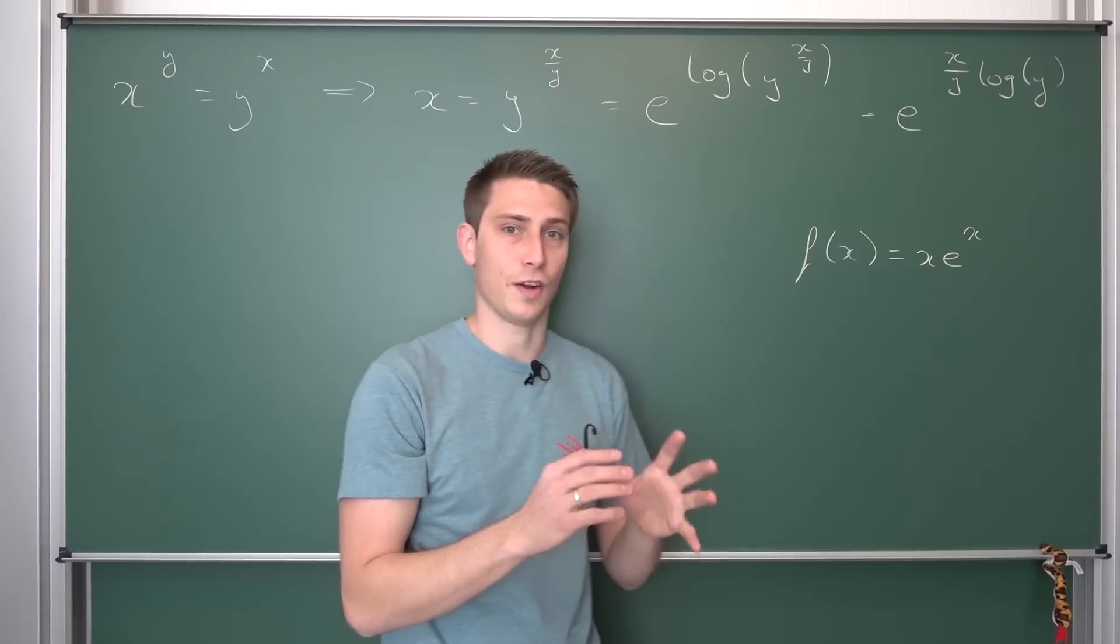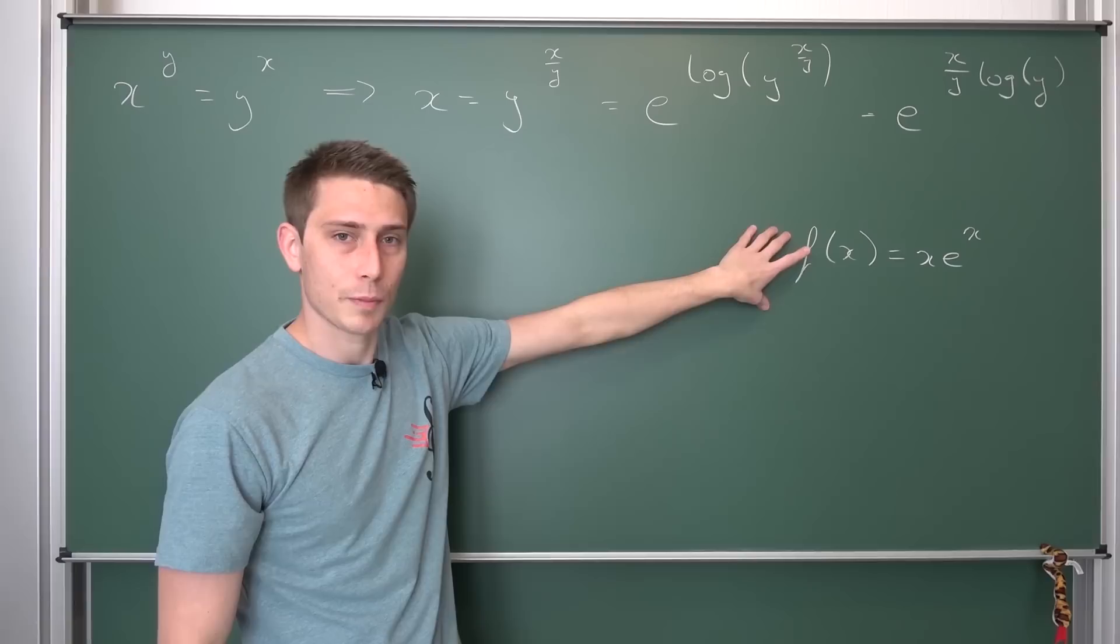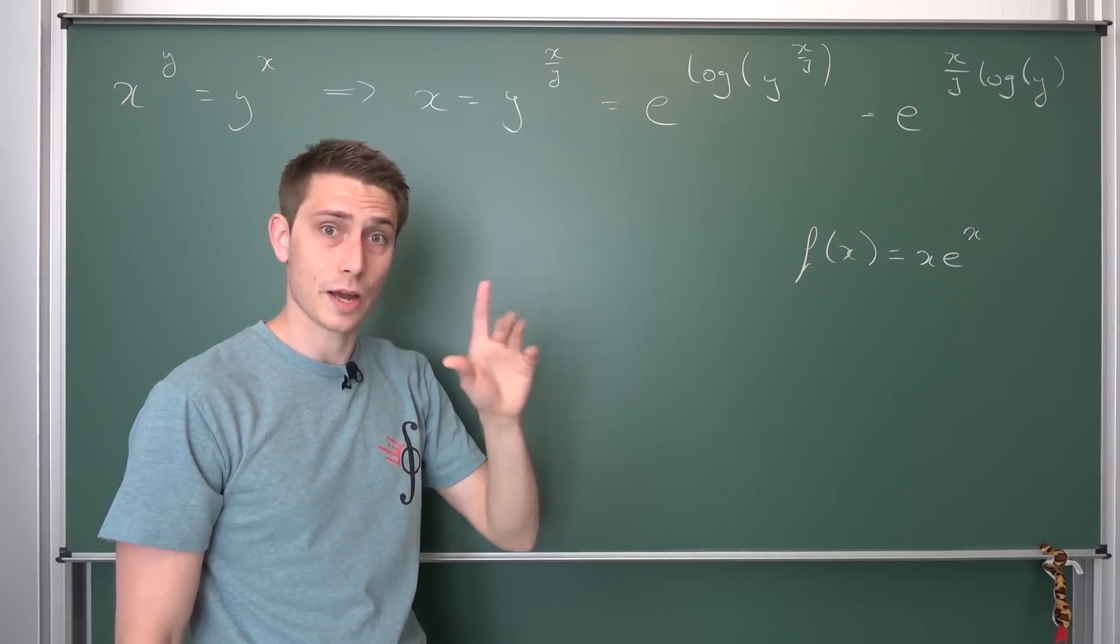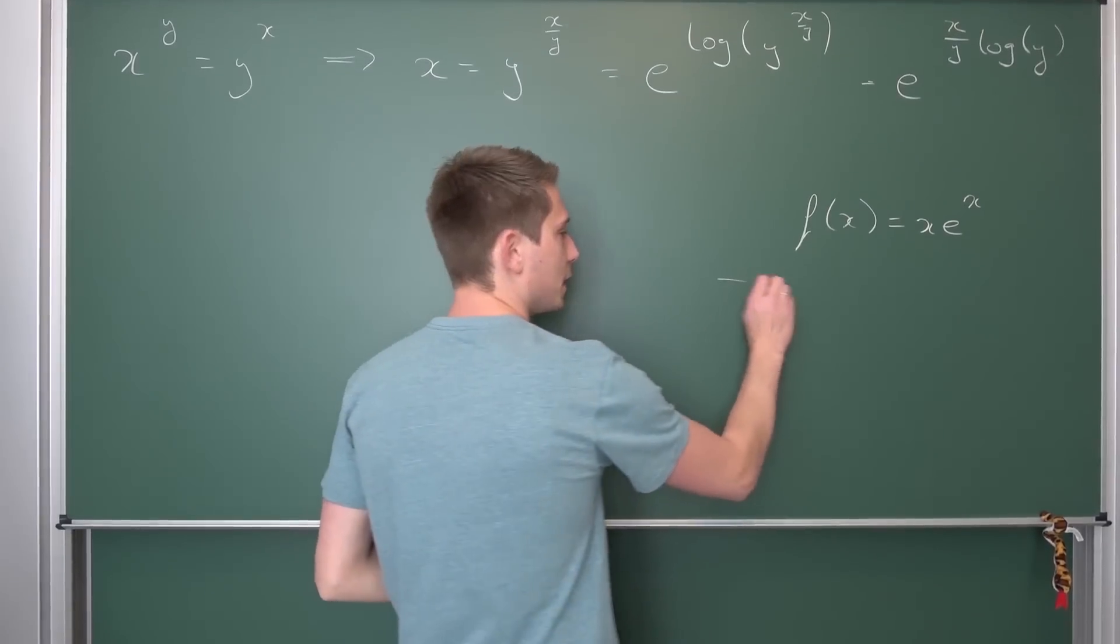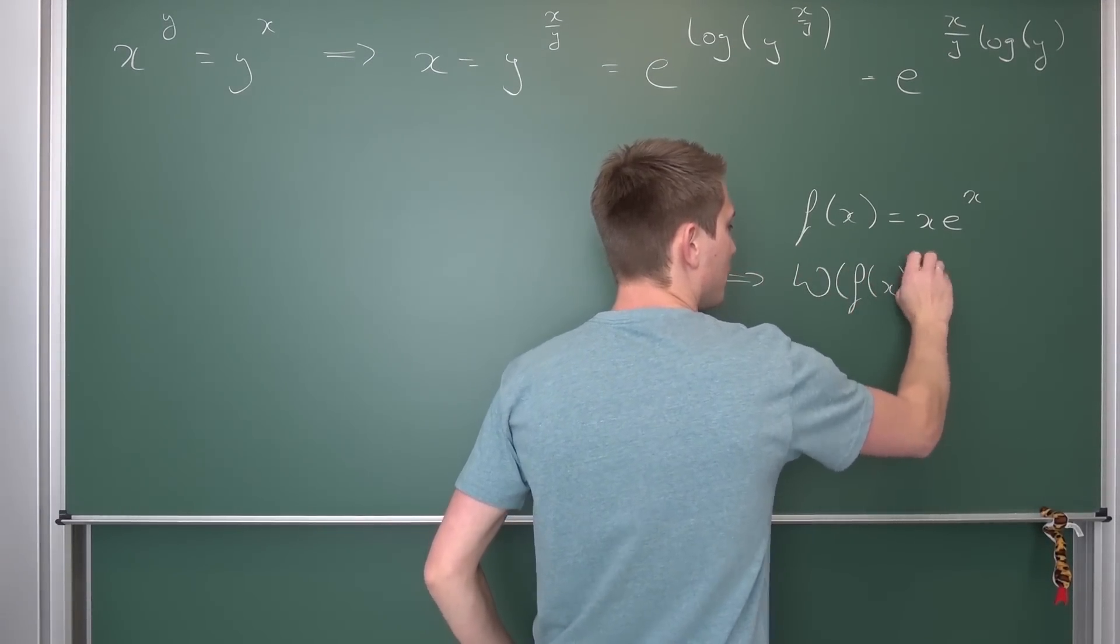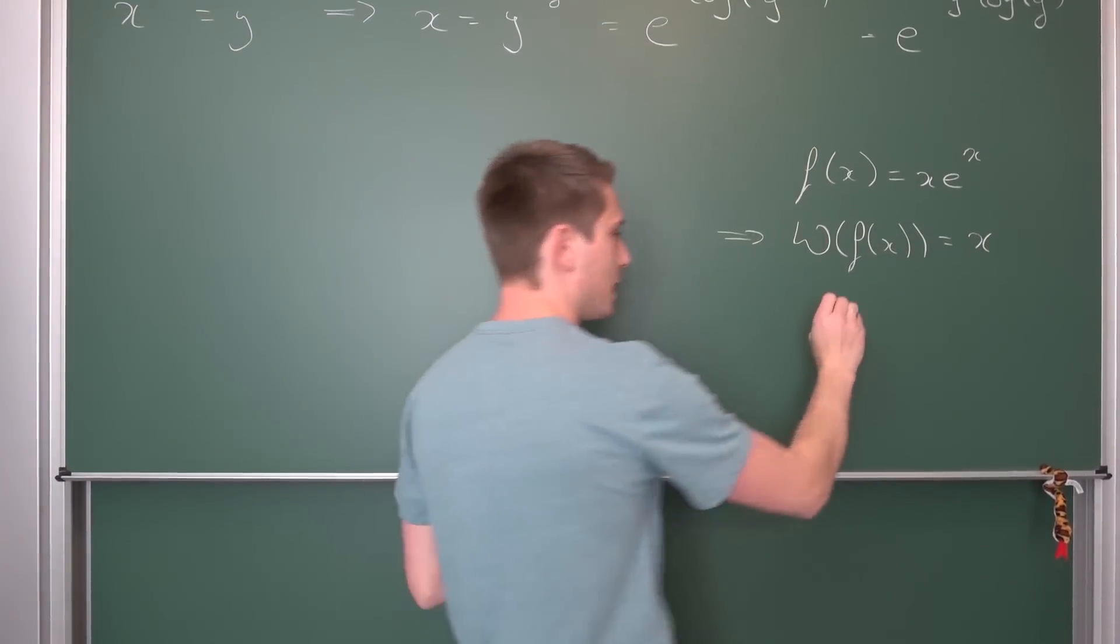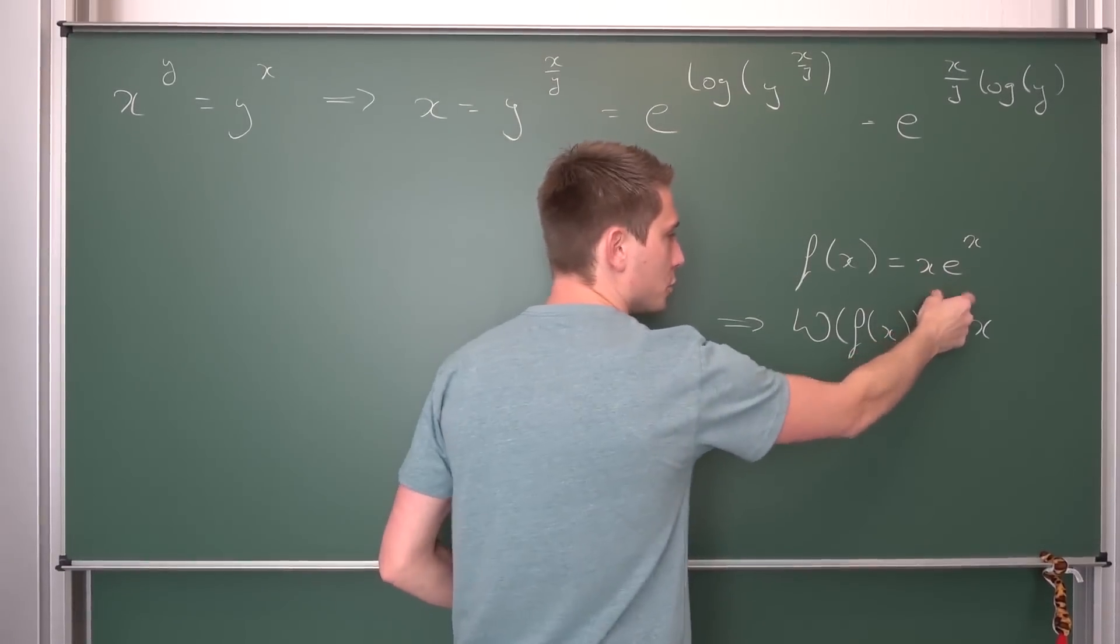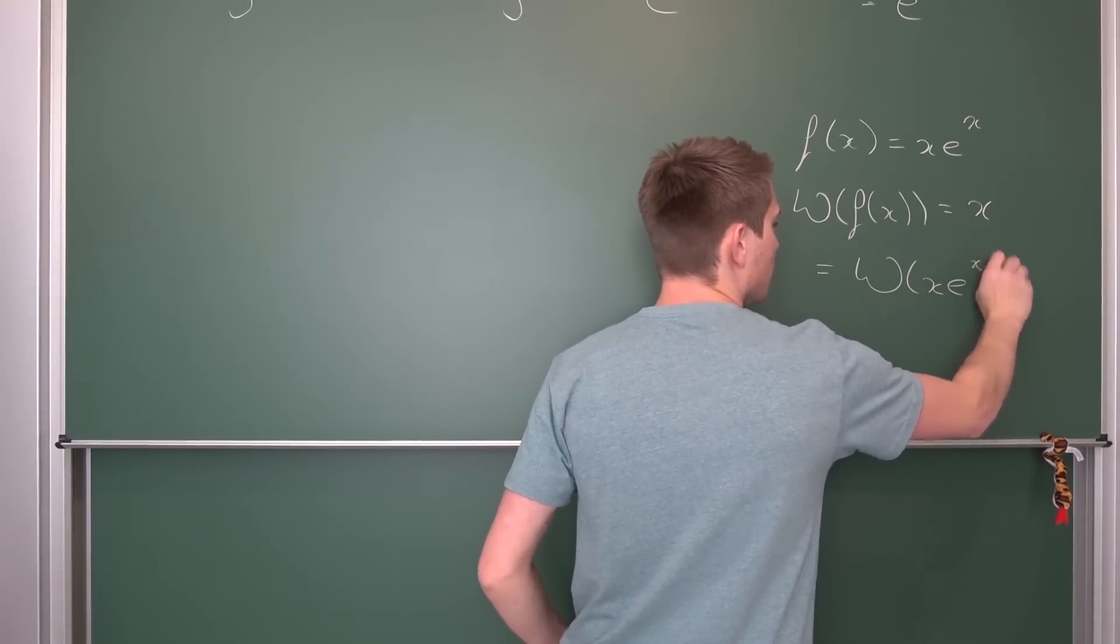So it's not a function in normal cases, it's more like a mapping. But if you apply a Lambert W function on both sides, you are able to extract the argument x from here. Meaning if we were to apply a Lambert W function to f, we are going to end up with x in itself. But on the other hand, this is the same as applying the Lambert W function to this side. So Lambert W of x times e to the x.